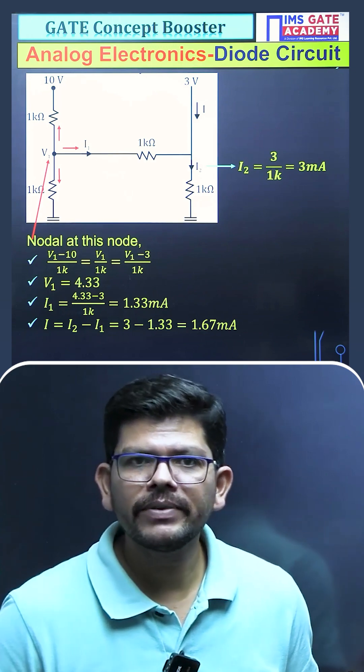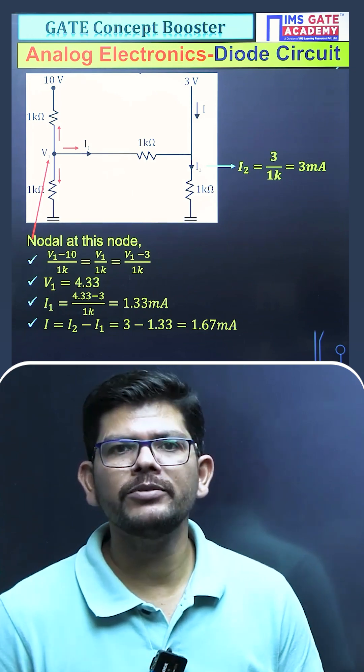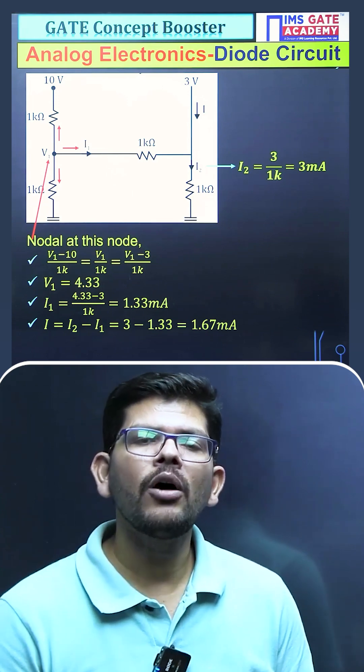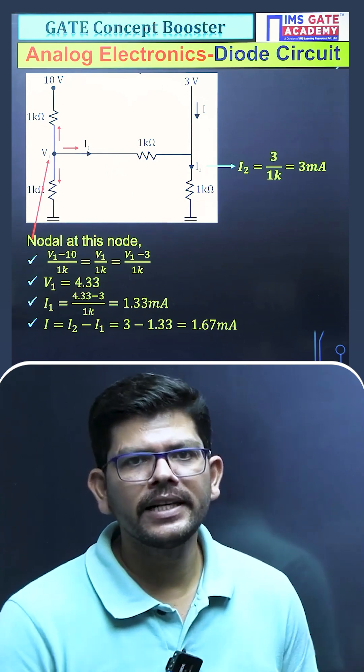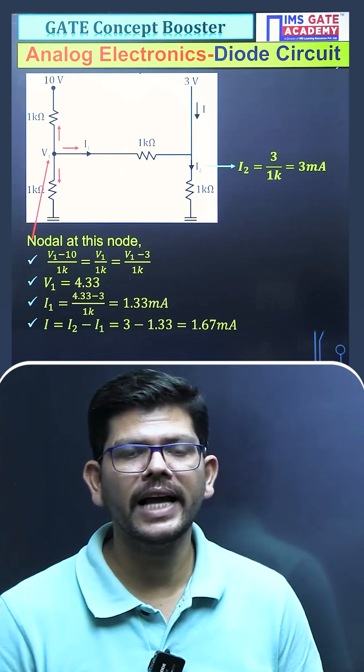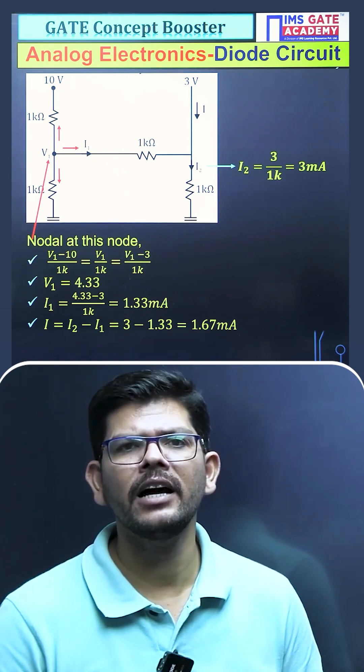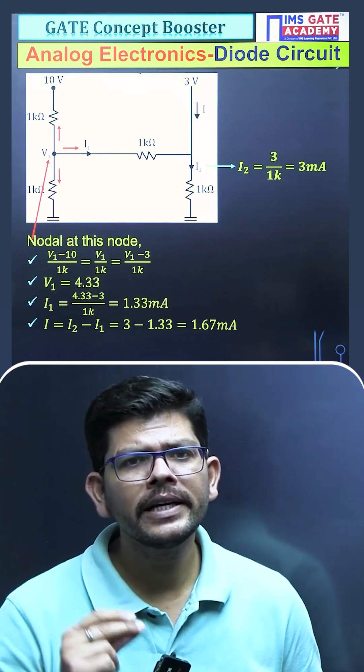So it was looking like a very difficult question. But at the end, what you have seen is it's a normal KVL-KCL problem. This is how all the diode problems finally end up. I hope that this question as well as the solution is clear to you. Next time when a similar question appears in the GATE exam, you will be able to solve it easily.